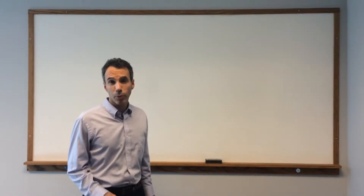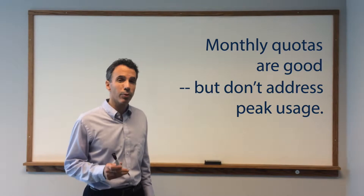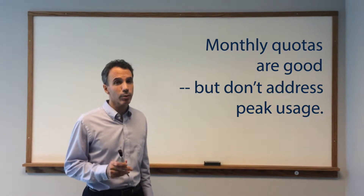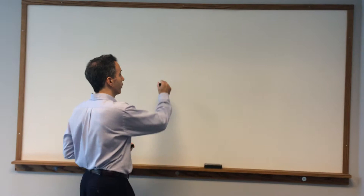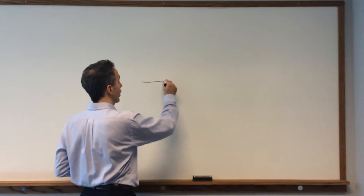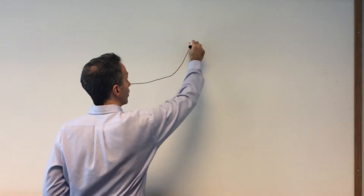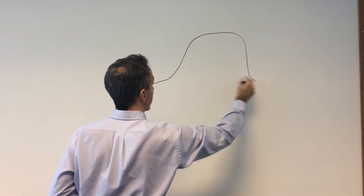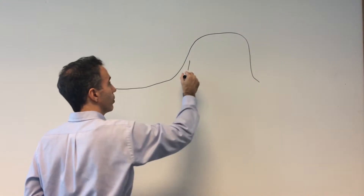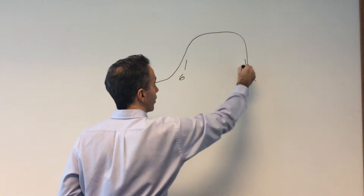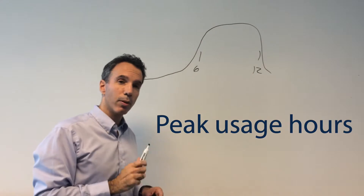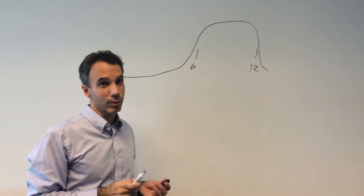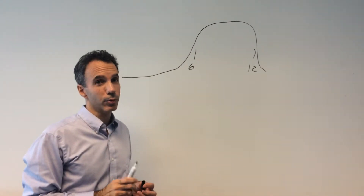It's more important than ever to manage your bandwidth. Monthly bandwidth quotas can provide some level of control over bandwidth use, but that doesn't address peak usage during the day. Your bandwidth during the day probably looks something like this — starts out okay, builds a little bit over time, and then really spikes. Let's say this is maybe 6 to midnight. These are your peak usage hours — the time when most people are online.